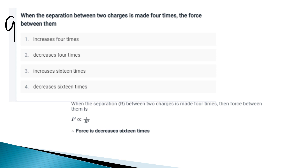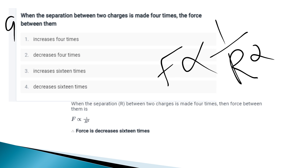When the separation between two charges is made four times, what is the force between them? Using F proportional to 1/r², if distance becomes 4 times, then r² becomes 16 times. Therefore the force will decrease 16 times.